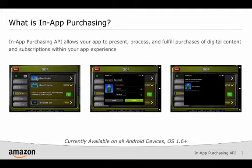As you can see in the purchase flow, there is the option to purchase with Amazon Coins. Amazon Coins are a new virtual currency that Amazon's US customers can use to purchase apps, games, and in-app items on Kindle Fire without any additional integration with the SDK. Developers get paid the same 70% revenue share whether customers choose to pay with their Amazon Coins or with their credit card.